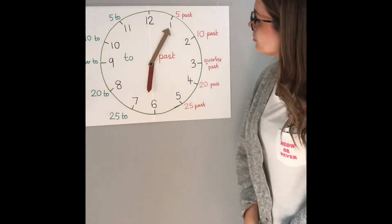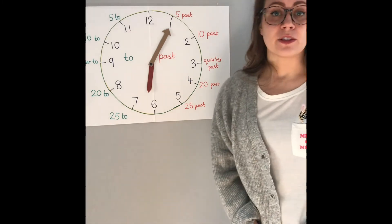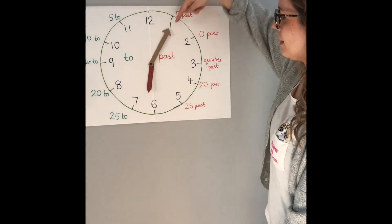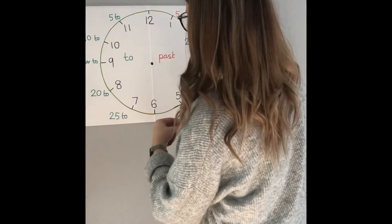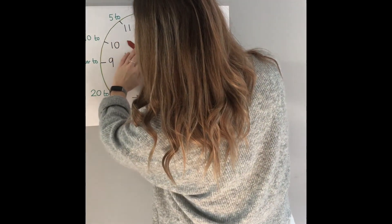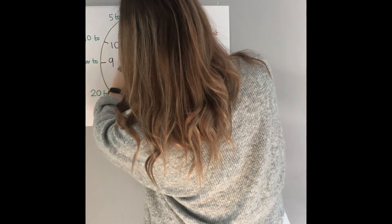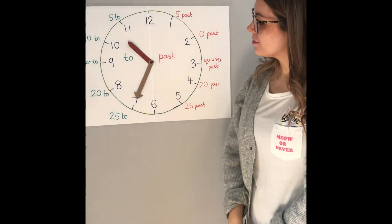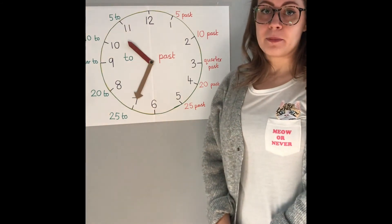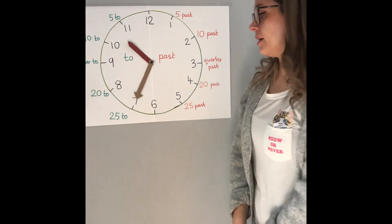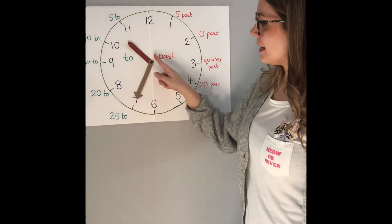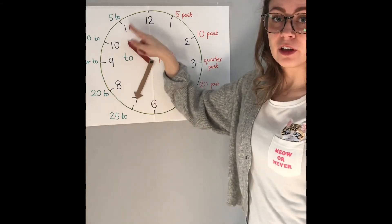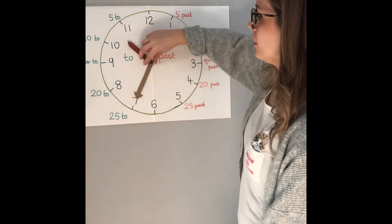Have a go at this one. It's on the past side again — the minute hand is pointing to five past, and it's five past six. Now, is the minute hand on the past side or the 'to' side? The minute hand is on the 'to' side. It's 25 to the next hour, which will be 11 o'clock. So this time is 25 to 11.